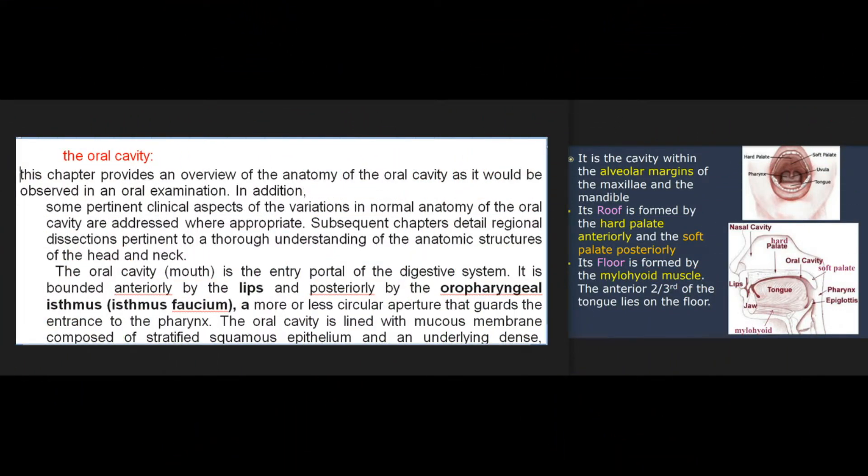This chapter provides an overview of the anatomy of the oral cavity as it would be observed in an oral examination. In addition, some pertinent clinical aspects of the variations in normal anatomy of the oral cavity are addressed where appropriate. Subsequent chapters detail regional dissections pertinent to a thorough understanding of the anatomic structures of the head and neck.